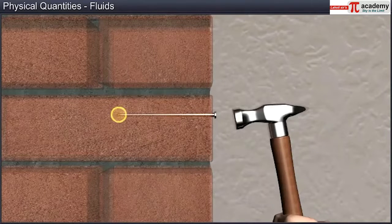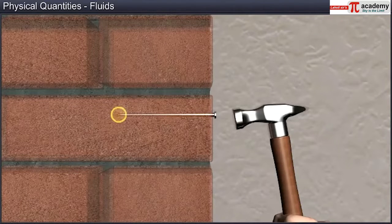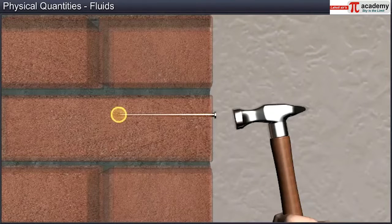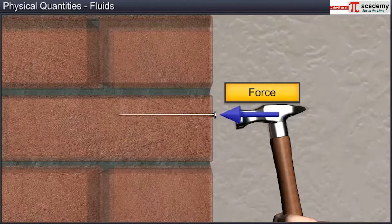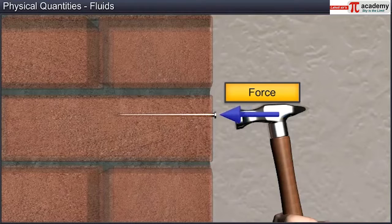This is because, for a sharp nail, the area on which force acts is less, hence more pressure. Here, the force exerted on the nail is perpendicular to the surface on which it is applied.